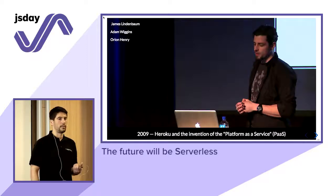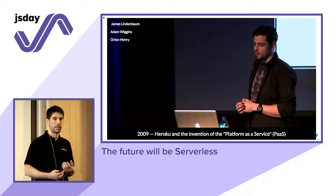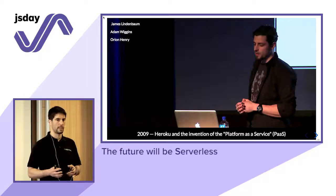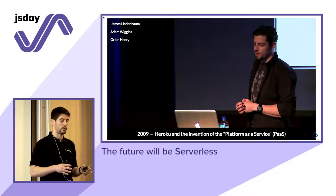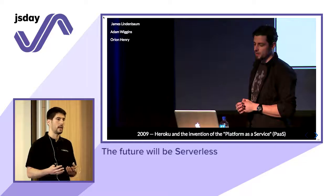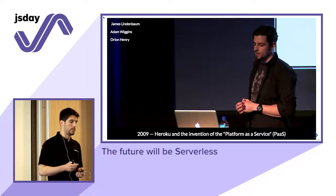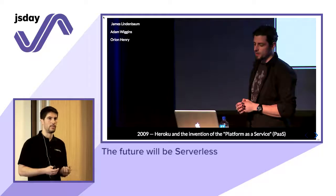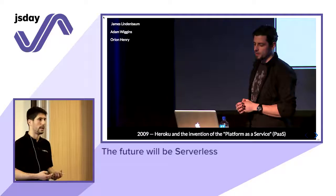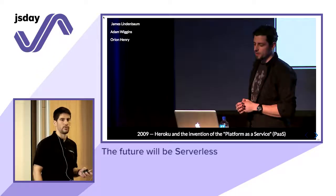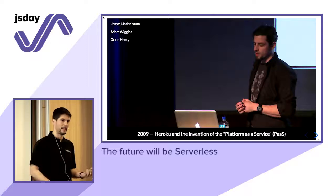They later extended these principles to support other frameworks and languages. They were very smart in shifting the concept: you don't need to manage infrastructure yourself — it's underneath you, you don't need to worry about it, just tell us how your application looks and we'll manage scalability and things like that. Interestingly, co-founder Adam Wiggins also wrote the 12-Factor App manifesto, which many companies follow today to create scalable applications. Salesforce eventually acquired Heroku, and they even hired the inventor of Ruby as company architect.